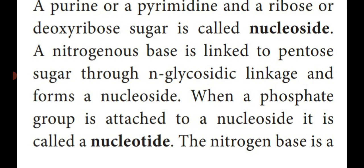The nitrogenous base is divided into two types: purines — adenine (A) and guanine (G) — and pyrimidines, which are three types: cytosine (C), thymine (T), and uracil (U).